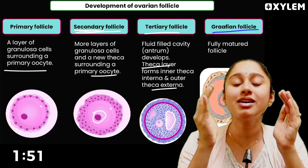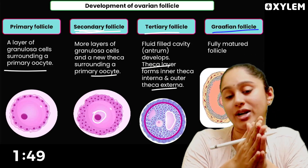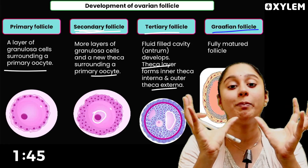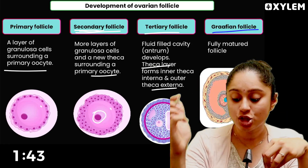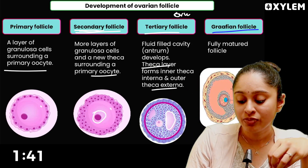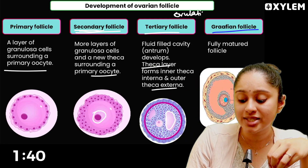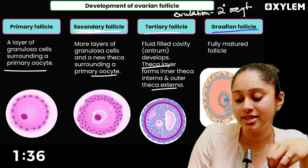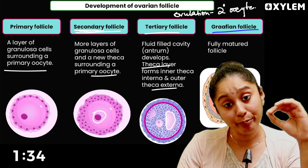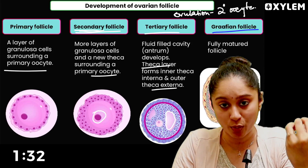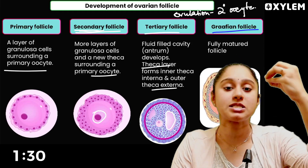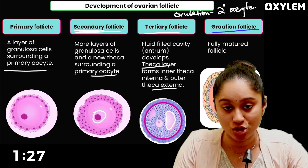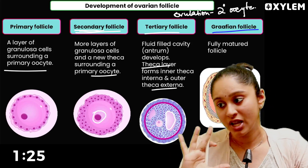In the Graafian follicle stage, when there is a hormonal surge, the follicle ruptures and releases the egg — this is ovulation. What is released during ovulation is the secondary oocyte. If this secondary oocyte meets the sperm, it will complete meiosis 2 and produce the mature ovum.